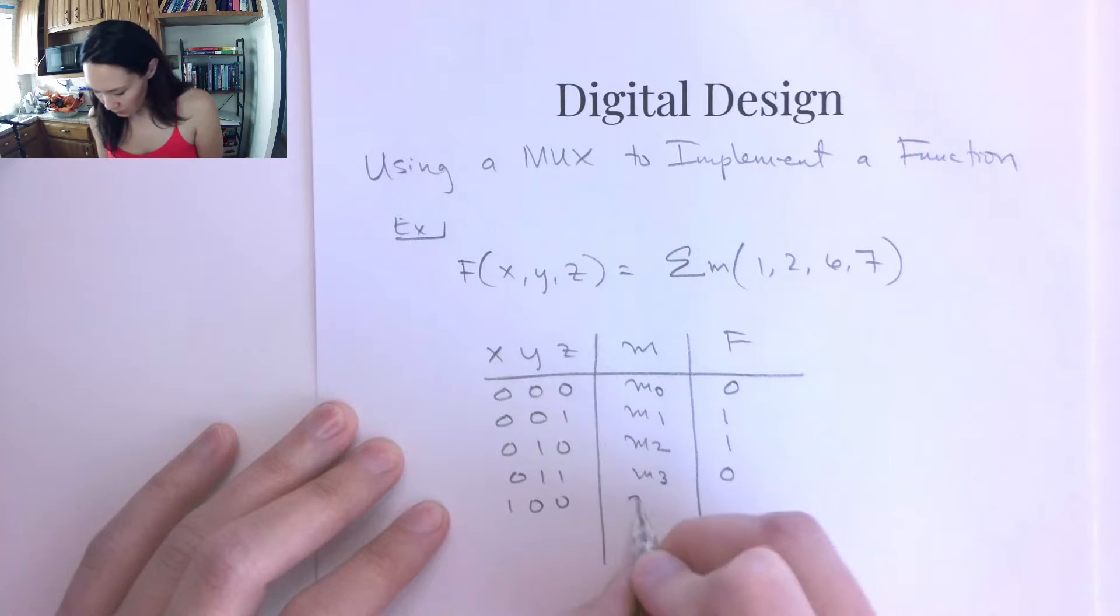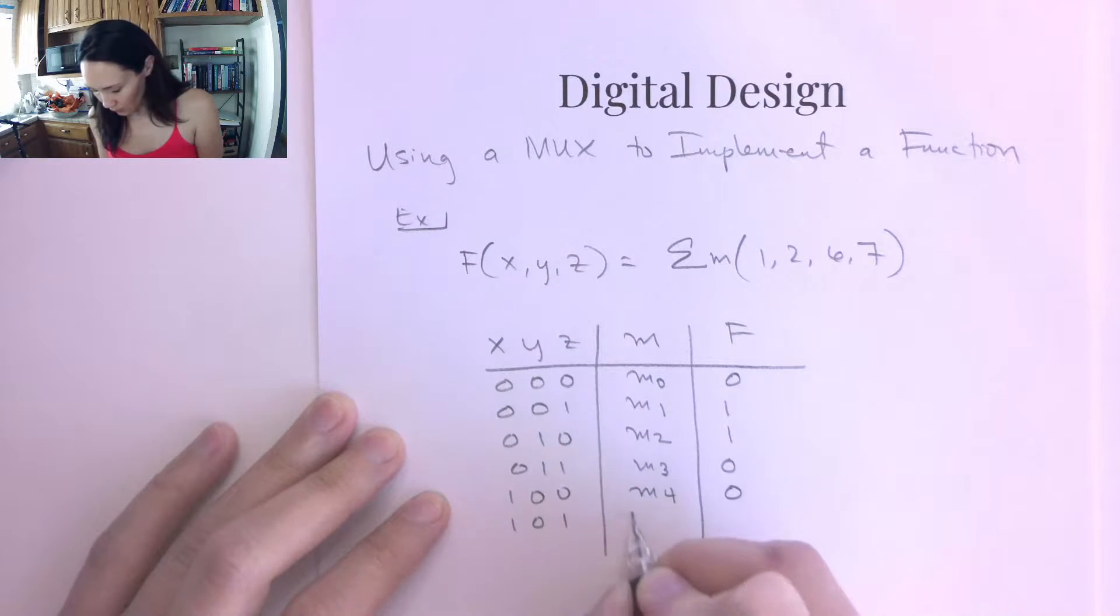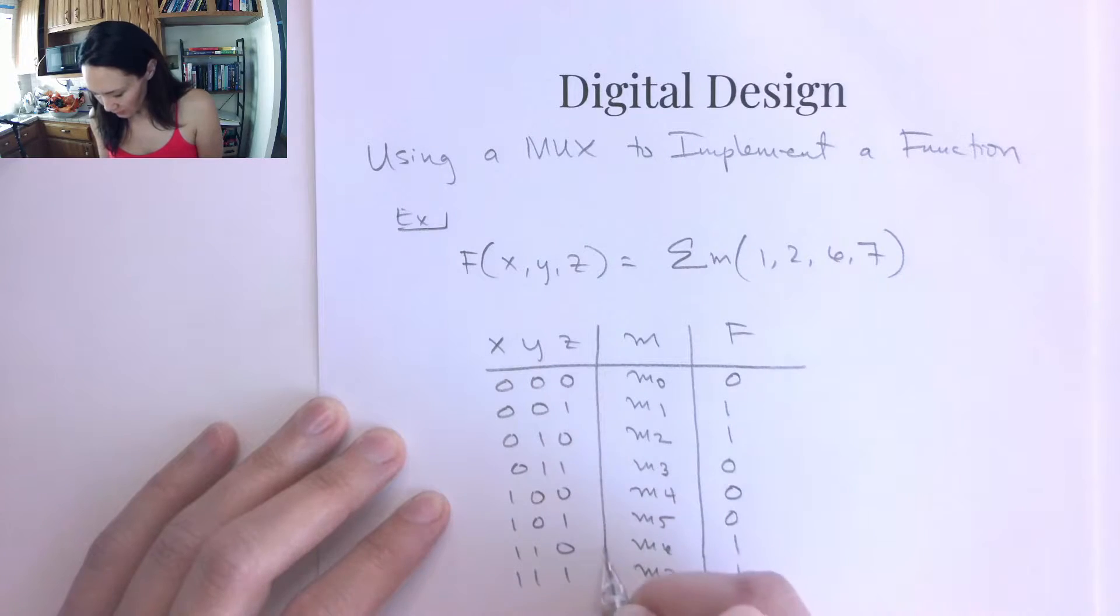1, 0, 0 is minterm 4, also not in the list, so it gets a 0. 1, 0, 1 is minterm 5, also not in the list, so it gets a 0. But 1, 1, 0 is minterm 6, that's in our list, so we have a 1. And 1, 1, 1 is minterm 7, and we have a 1 there, because that's also in our list.